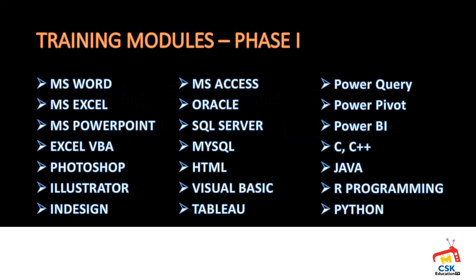Phase 1 and Phase 2 models. Phase 1 includes the MS Office Package: Word, Excel, PowerPoint, and Excel macros with VBA. Design software: Photoshop, Illustrator, InDesign. Database Management Systems, and programming languages including C, C++, Java, and Python.